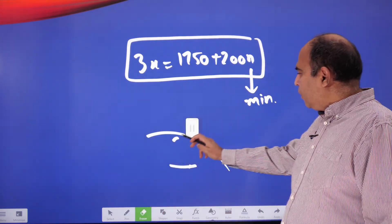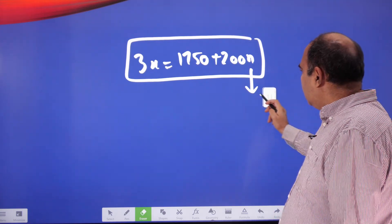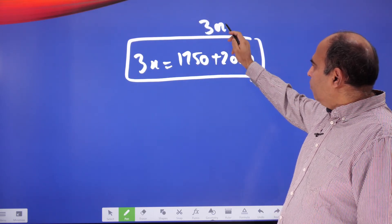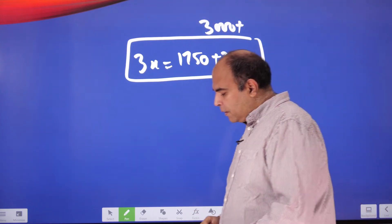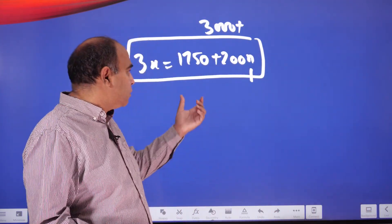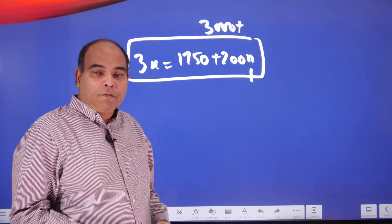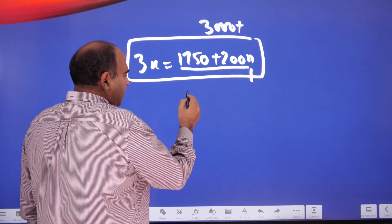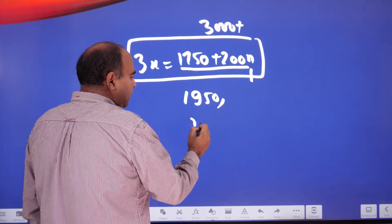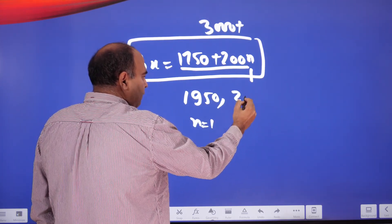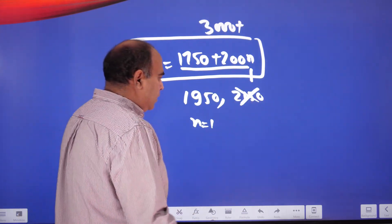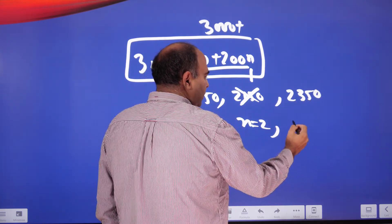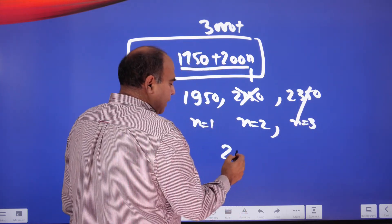Since x must be more than 1000, the total right-hand side must be more than 3000. We need to find values of n such that 1750 + 200n is a multiple of 3. With n=1 we get 1950 — valid as a multiple of 3 but x too small. With n=2 we get 2150 — not a multiple of 3. With n=3 we get 2350 — also not a multiple of 3. With n=4 we get 2550, which is again a multiple of 3.